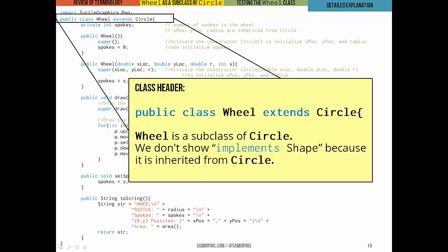First things first, in the class header, we can see that Wheel extends Circle. And again, this means that it's a subclass of Circle and it inherits all of Circle's instance variables and methods. Now we don't have the implements Shape statement here, and that's interesting. We don't need it because Circle implements Shape and Wheel extends Circle. So Wheel inherits that Shape interface through Circle. That's a subtle thing that just happened there.